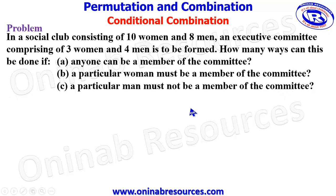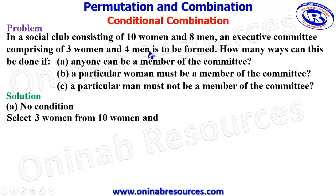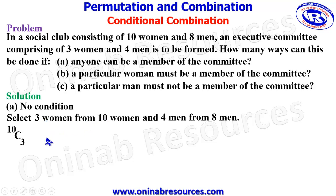We start the solution from A. No condition is attached to A. As a result, we select 3 women from 10 women and then 4 men from 8 men. Bringing in the combination formula, we have 10C3 multiplied by 8C4.